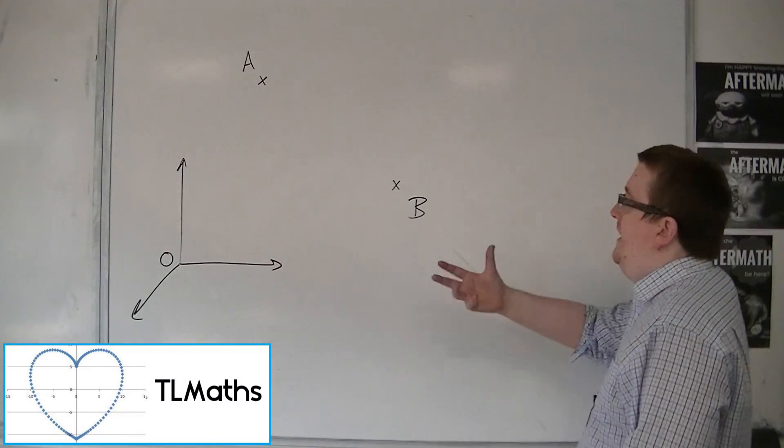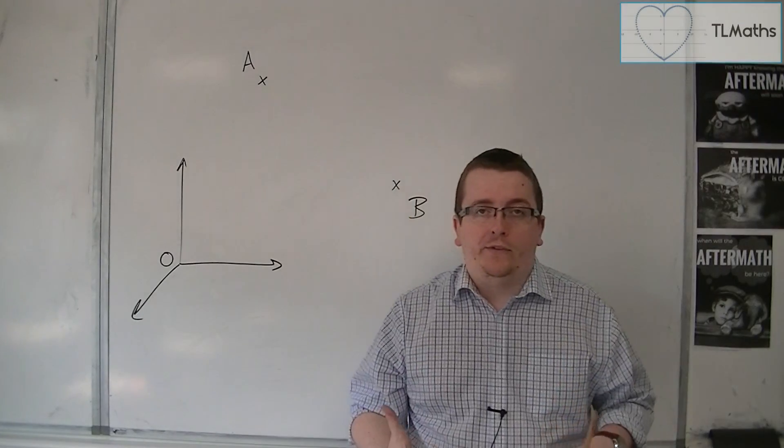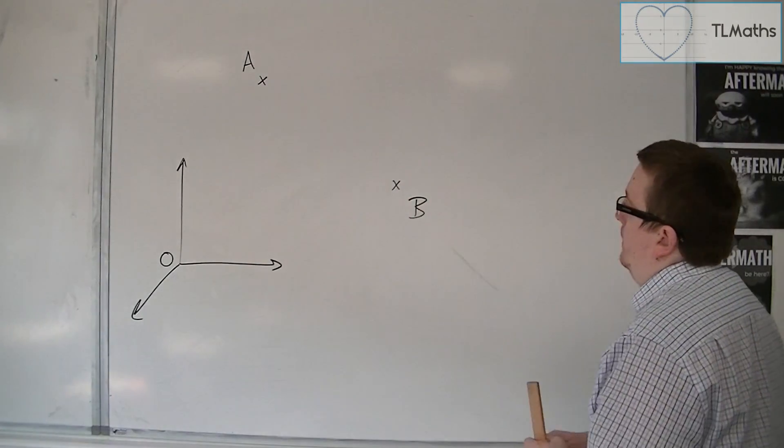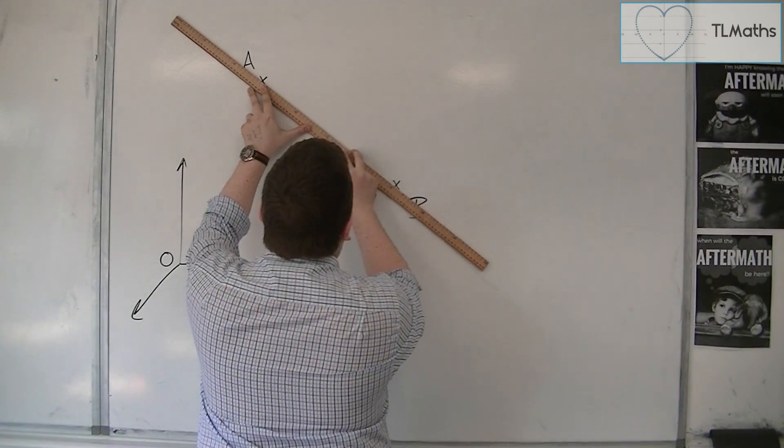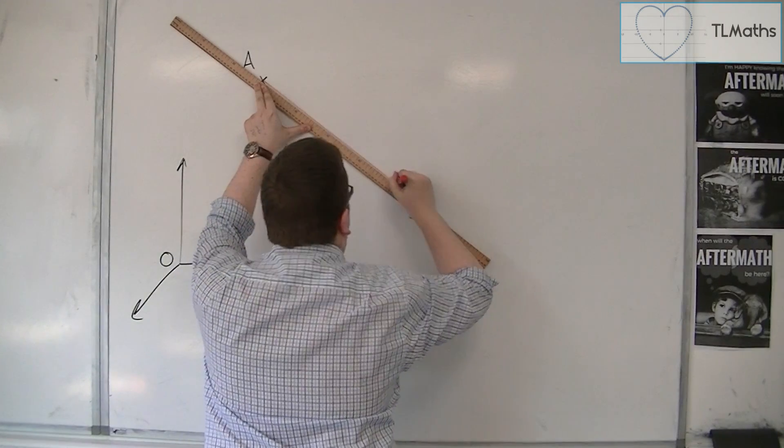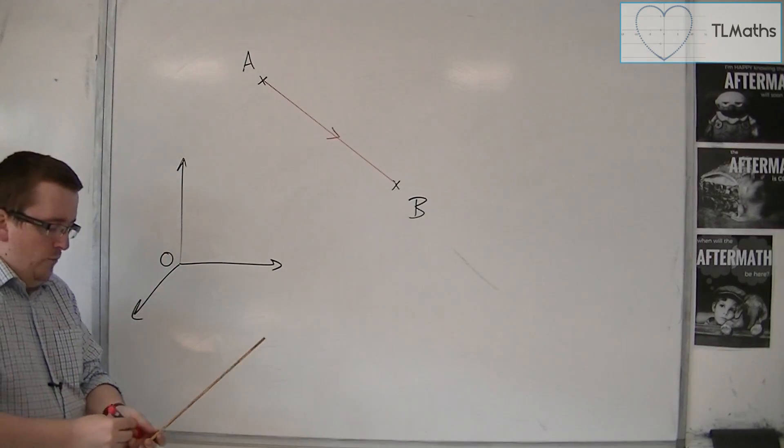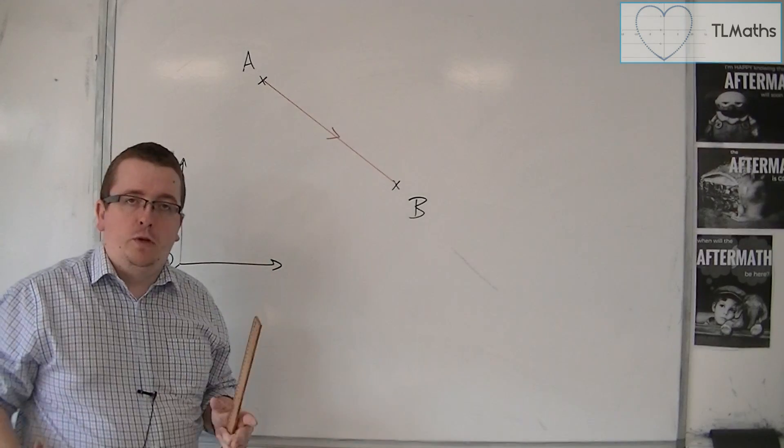Okay, so let's say we've got any old two points, A and B, in three-dimensional space. How do I get from A to B? If I'm just given two coordinates, what is the vector that will get me from A to B? Now we saw a simple example when we were looking at direction vectors, but we want to do this in a more general case.